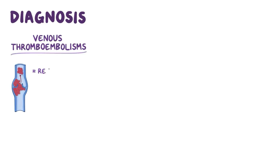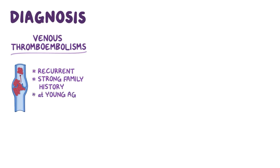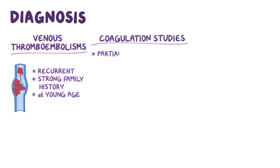When considering a diagnosis, factor V Leiden should be suspected in a person who presents with recurrent venous thromboembolisms, has a strong family history of venous thromboembolism, or suffers a venous thromboembolism at a young age. Coagulation studies can show a partial thromboplastin time, or PTT, that is shortened or normal.